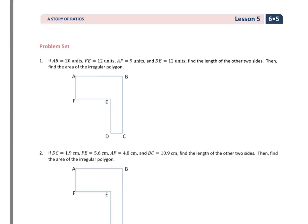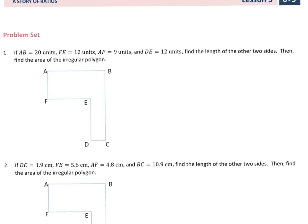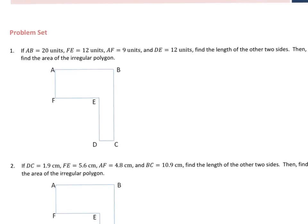So for number 1, it looks like we're going to be doing some dimension labeling. If AB is 20 units, FE is 12 units, AF is 9 units, and DE is 12 units, find the length of the other two sides, then find the area of the irregular polygon.